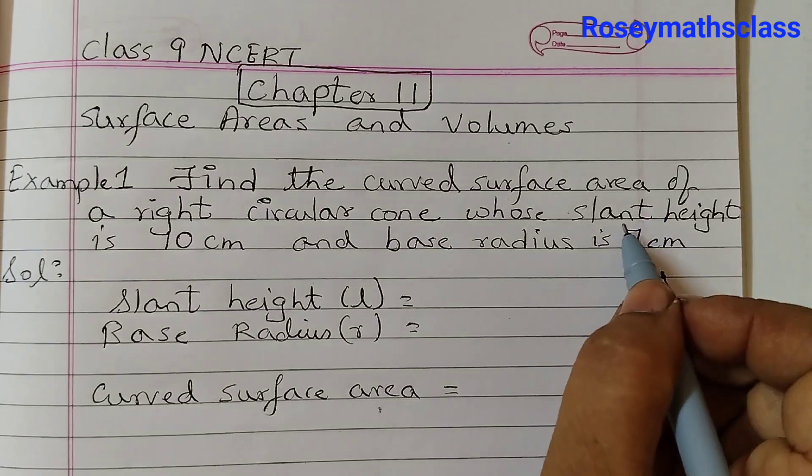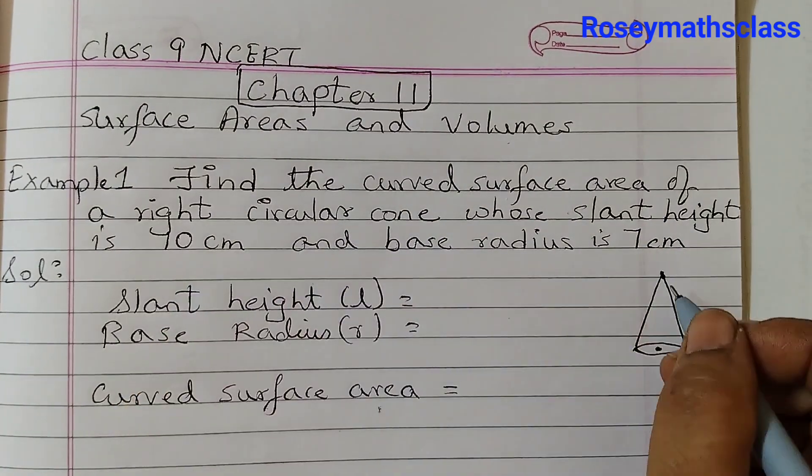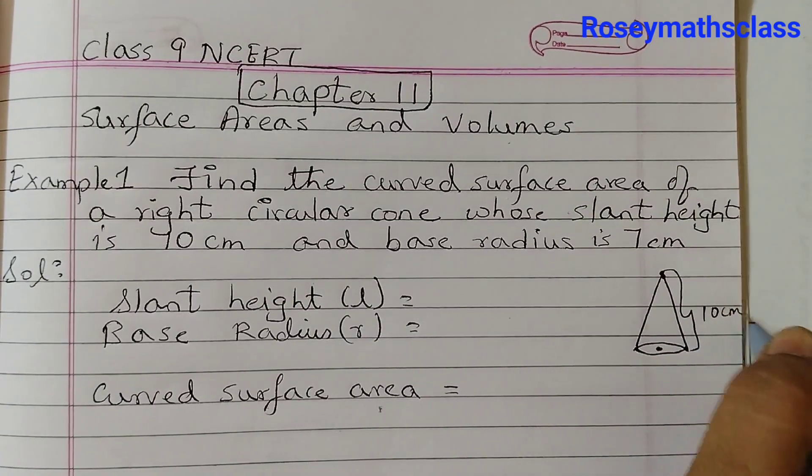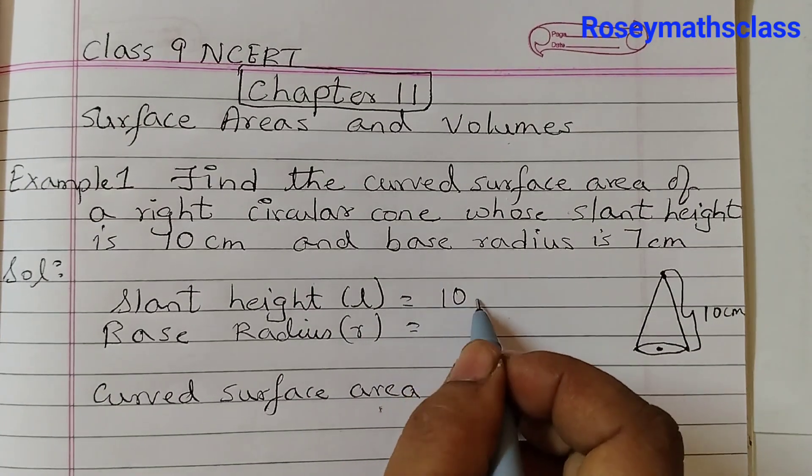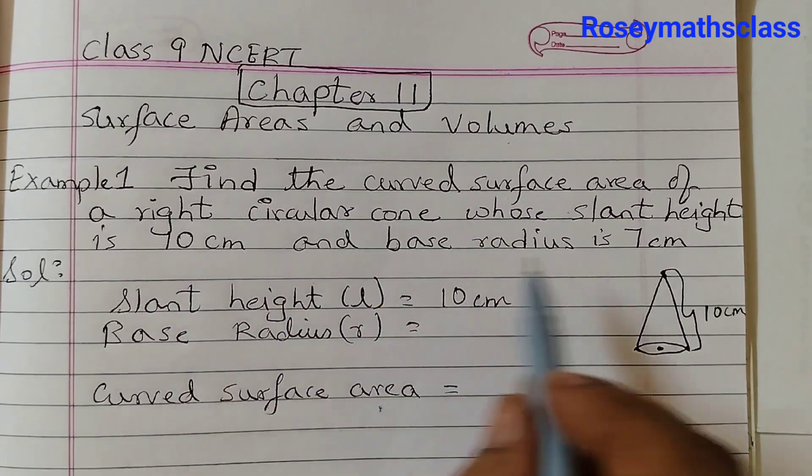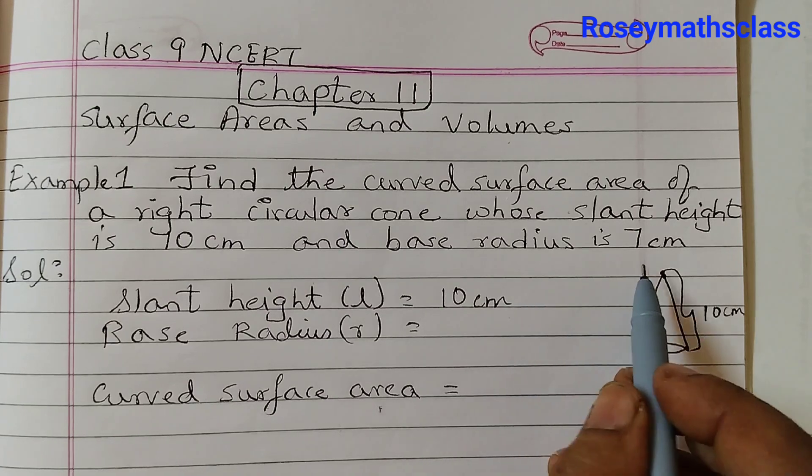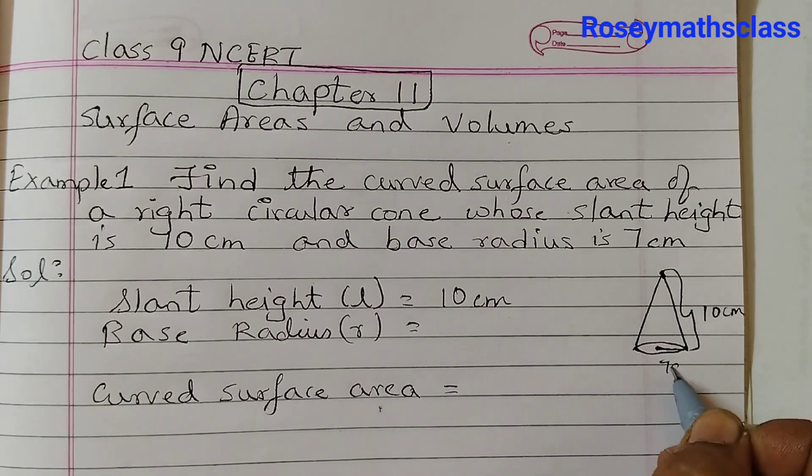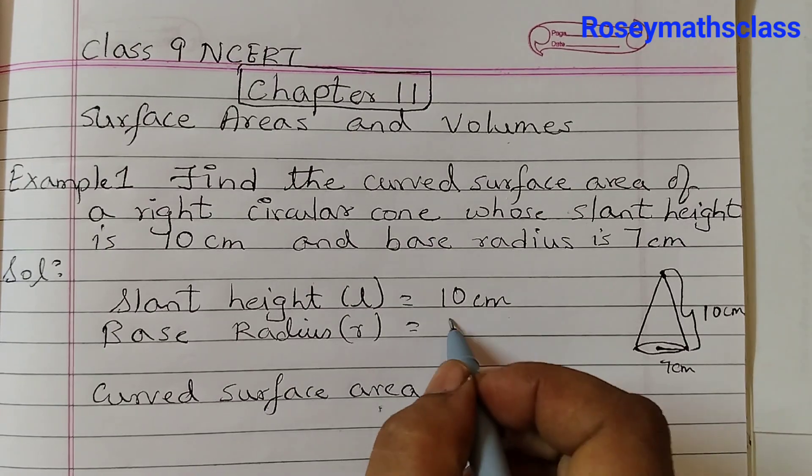So that's the centre. What is given: slant height is 10 cm, so this is the slant height which is 10 cm represented by L, the letter L. And the base radius is 7 cm. So this is the base radius which is 7 cm.